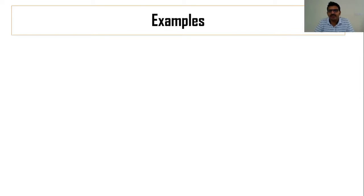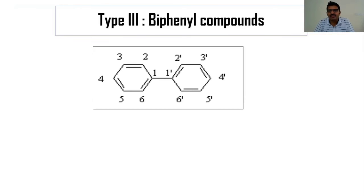Today we start with nomenclature of biphenyl compounds. In biphenyl compounds, two benzene rings are joined together through a carbon-carbon single bond, sharing one bond in common.